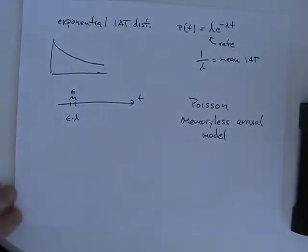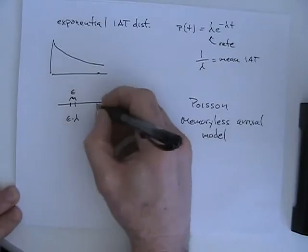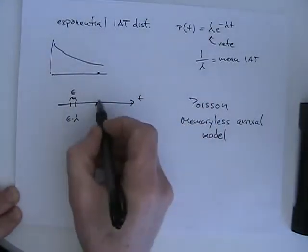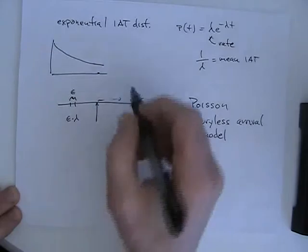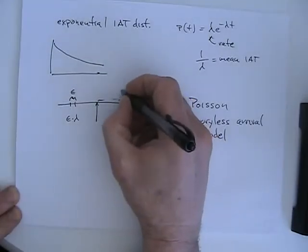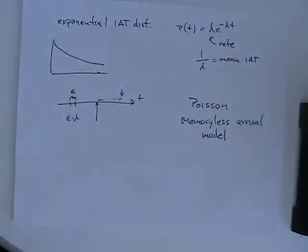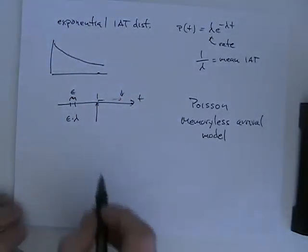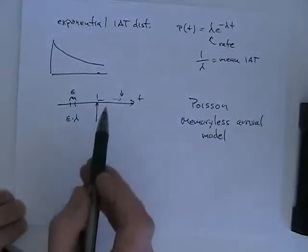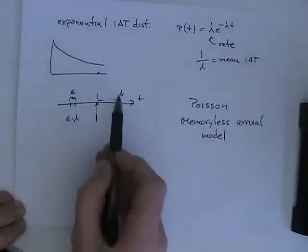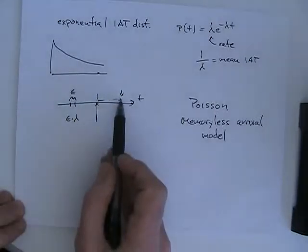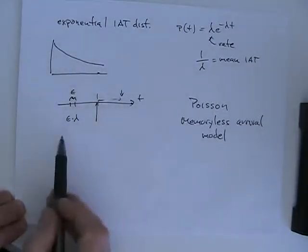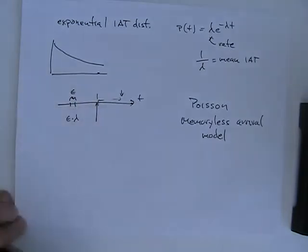Because it's memoryless, at any point in time you see the same distribution of time until the next arrival, whether that point is right after the last arrival or a random time. Each arrival is independent, and the time until the next arrival is independent of how long you've been waiting.